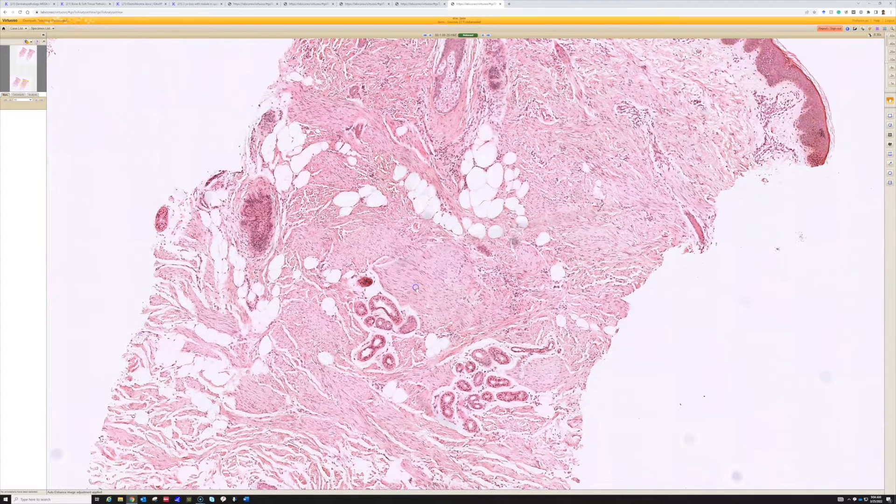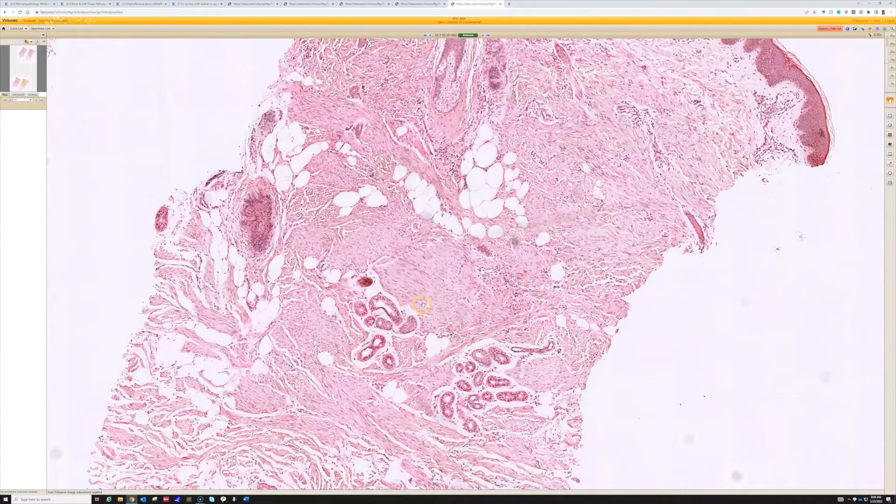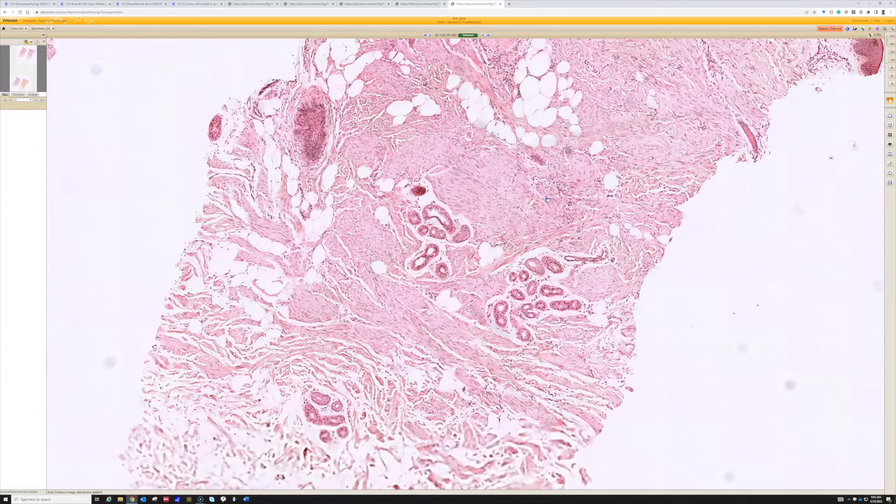They're actually fibroblasts or myofibroblasts, but you don't need to do a stain on these, in my opinion, for muscle markers, because actin is only going to be positive about half of the time. So even if it's actin negative, if it looks like this, I would still say it's still a dermatomyofibroma.